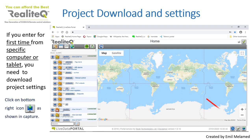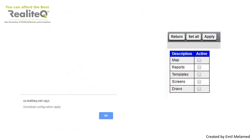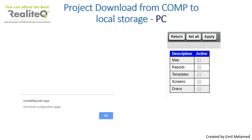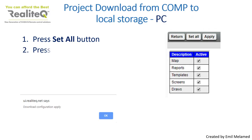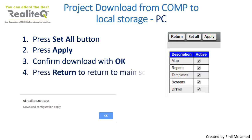For PC or tablet, click on the download icon on the bottom right corner of the display. To download project settings from a PC, press the Set All button, then press Apply. Confirm the download with OK. Press Return to go back to the main screen.